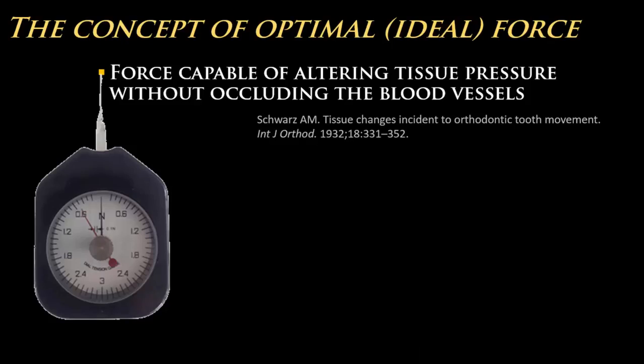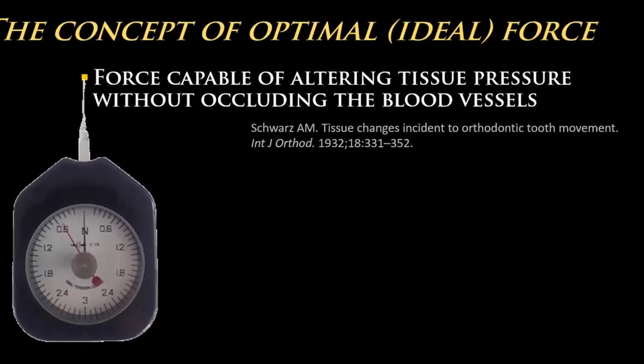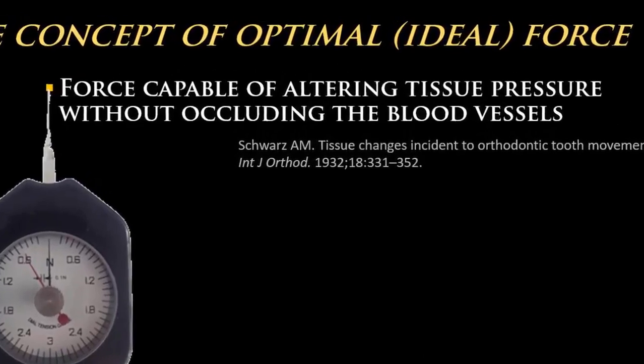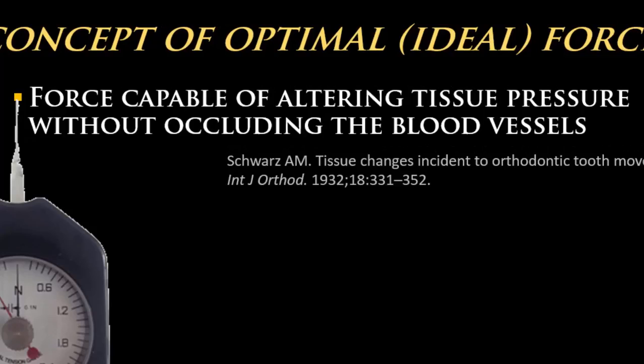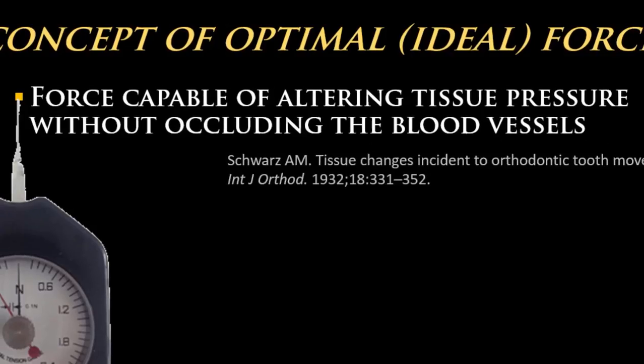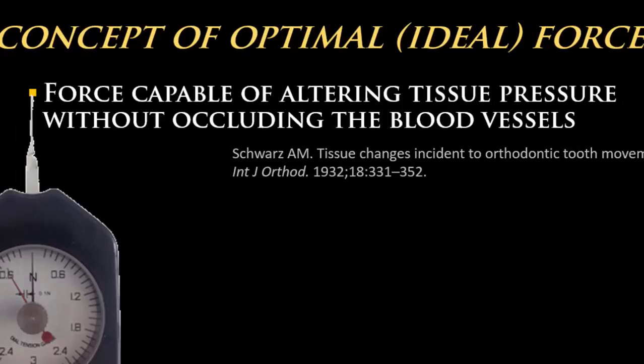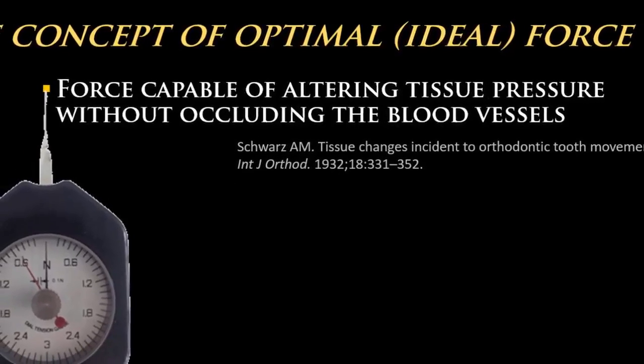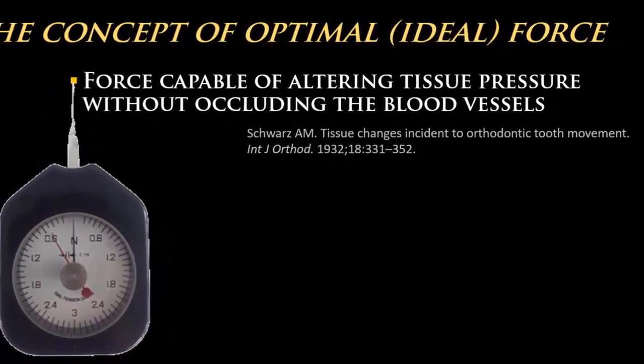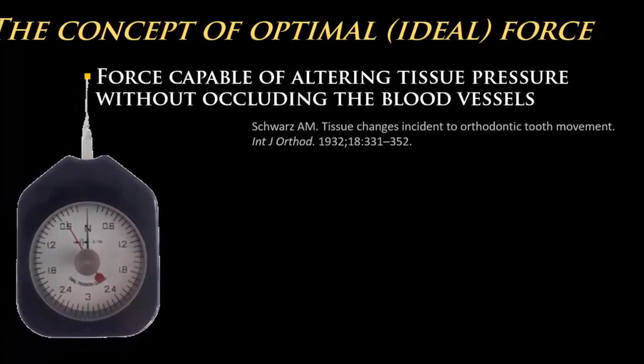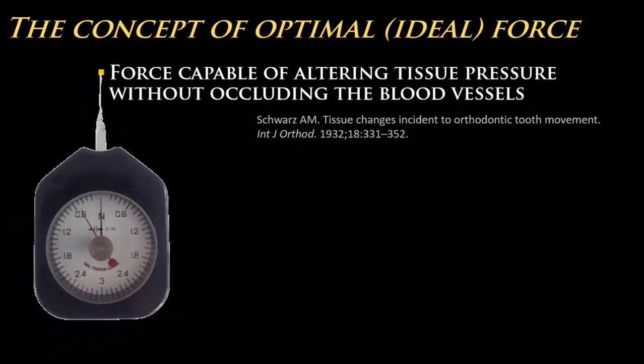The classic concept of optimal force was proposed by Schwarz in 1932, when describing that the optimal force would be the one capable of altering tissue pressure without occluding the blood vessels of the periodontal ligament. According to him, forces below this level would not induce tooth movement, whereas forces above this level would provoke areas of tissue necrosis which would hamper movement until undermining resorption removes necrotic tissues.